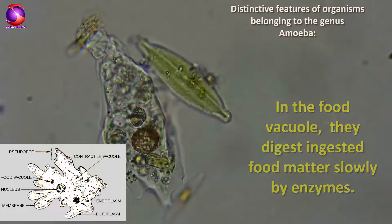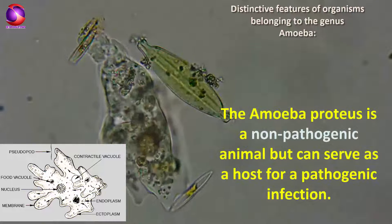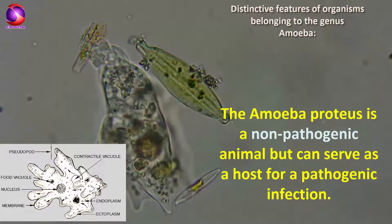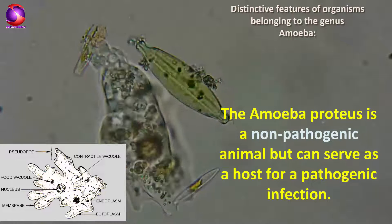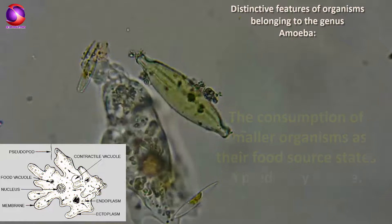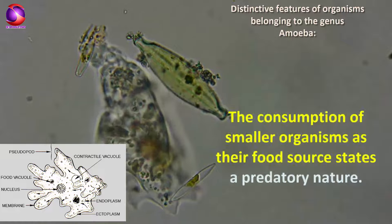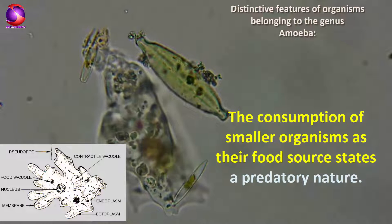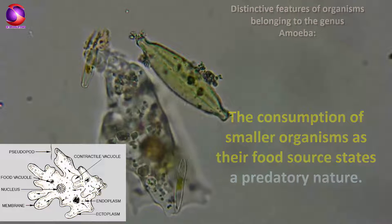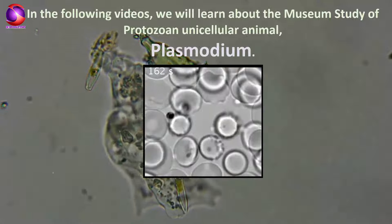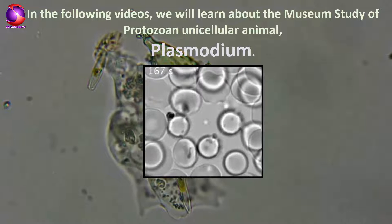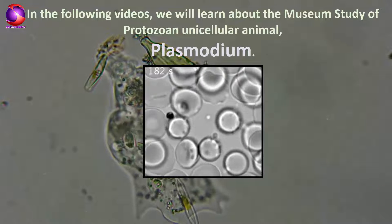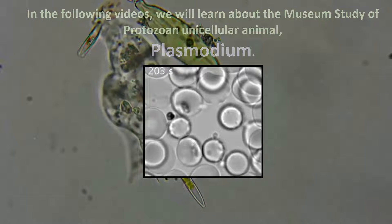They digest ingested food matter slowly by enzymes. Amoeba proteus is a non-pathogenic animal but can serve as a host for a pathogenic infection. The consumption of smaller organisms as their food source indicates its predatory nature. In the following videos we will learn about the museum study of protozoan unicellular animal Plasmodium.